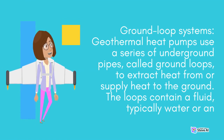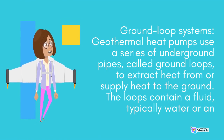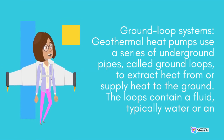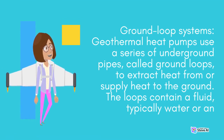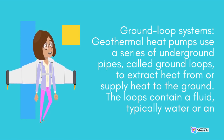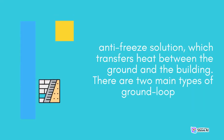Geothermal heat pumps use a series of underground pipes called ground loops to extract heat from or supply heat to the ground. The loops contain a fluid, typically water or an antifreeze solution, which transfers heat between the ground and the building. There are two main types of ground-loop systems.